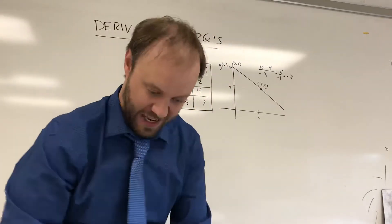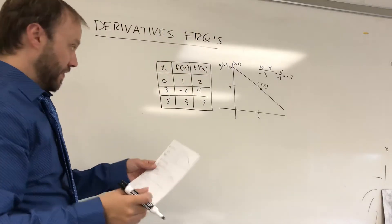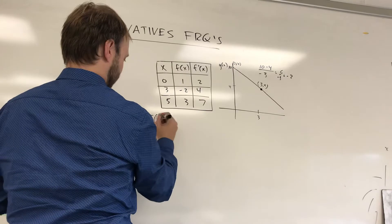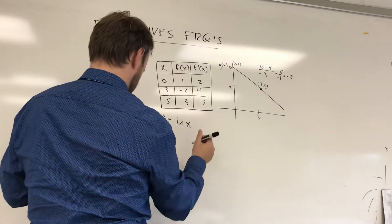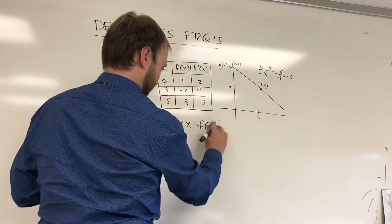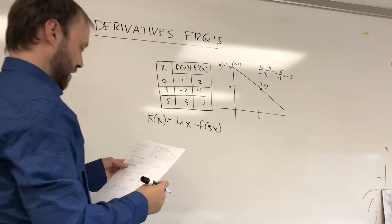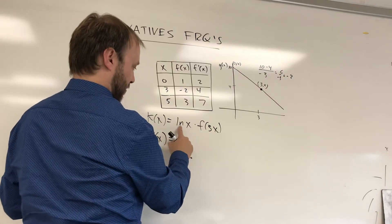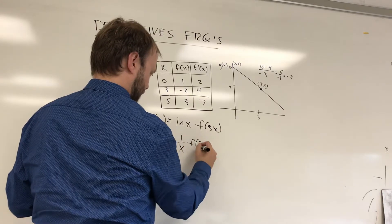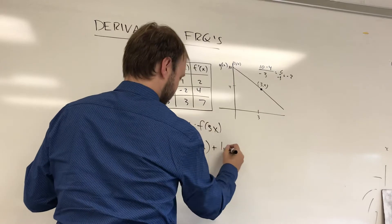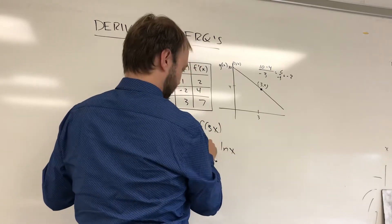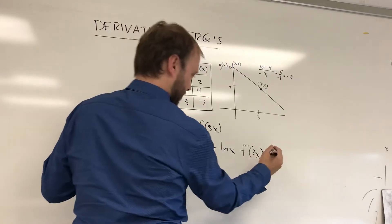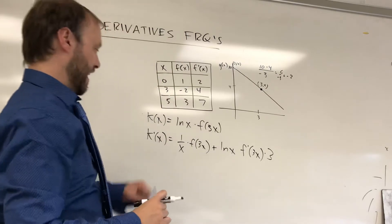They could also combine a known function with one of these. For example, k of x equals the natural log of x times f of 3x. It's a product of two different functions, so product rule: derivative of the first is one over x, times the second, plus the first times the derivative of the second. For the derivative of f of 3x: take the derivative of the outside, f prime, the inside doesn't change, but multiply by the derivative of the inside function, which is 3. That would be your derivative.